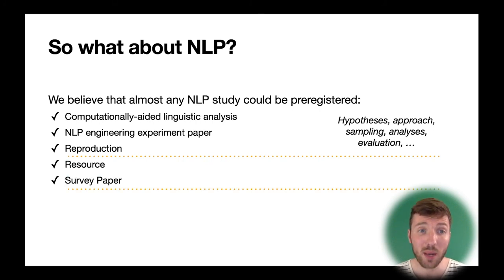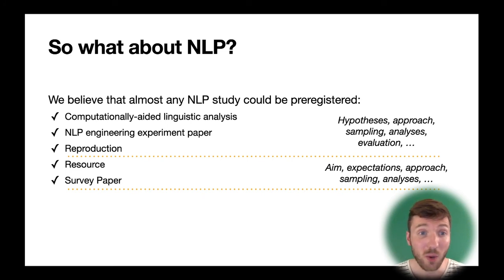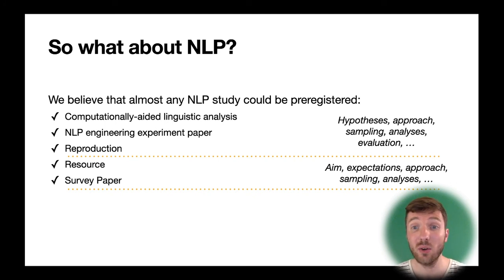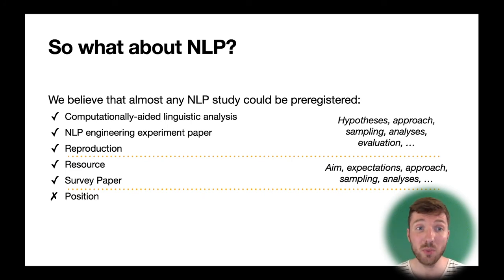For resource and survey papers, there are usually not really any hypotheses, but you could pre-register your research goals, the purpose for why you're carrying out the study, as well as your expectations — what do you expect to find? This is very interesting in light of the biases we all have in our work. Finally, for position papers, I don't think pre-registration is necessary, but for the other types there's a strong argument to be made.